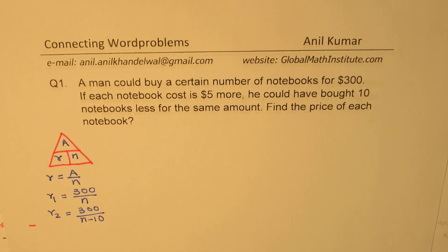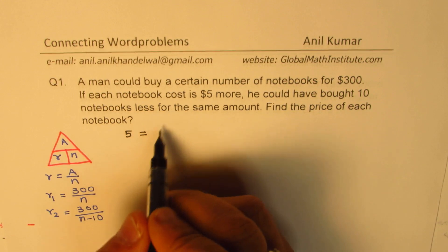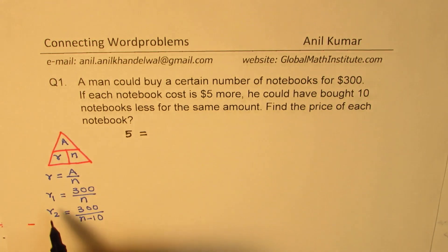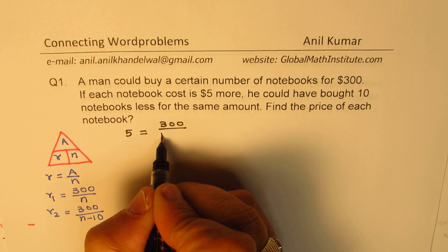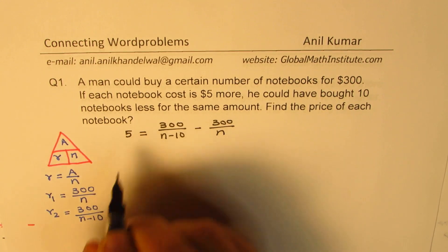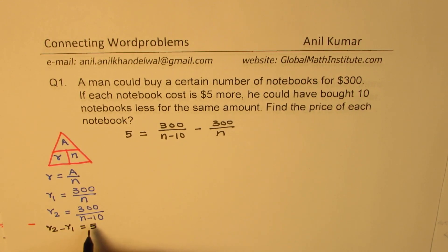These are the two rates which help us form the equation. The $5 is the change in price — if it is $5 more, then the rate is more. So, we write the equation: 300/(N−10) minus 300/N equals 5. We are solving for R2 minus R1 equals 5, and that gives us the equation to solve.